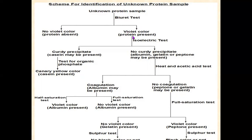If your sample is a protein, you will get violet color, indicating protein is present. The next test to identify which protein it is — the second test — is the isoelectric test. When you do the isoelectric test on the unknown protein sample, two chances are there: you may get curdy precipitate or no curdy precipitate. If you get curdy precipitate, casein may be present — write that in the inference column.